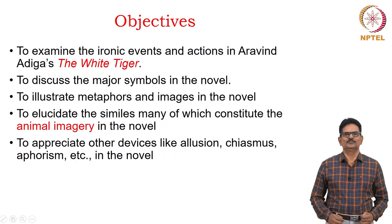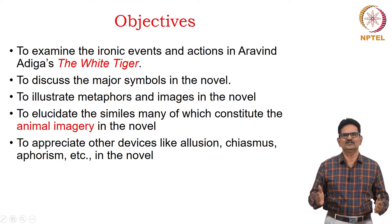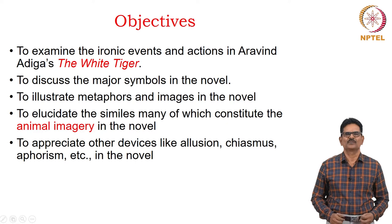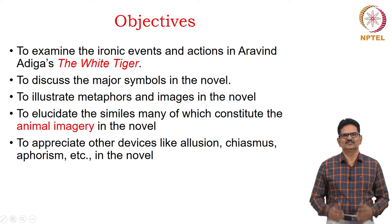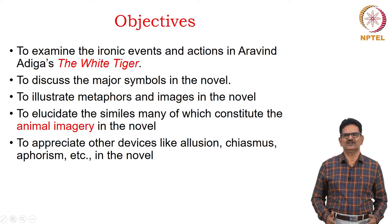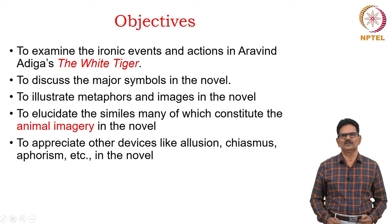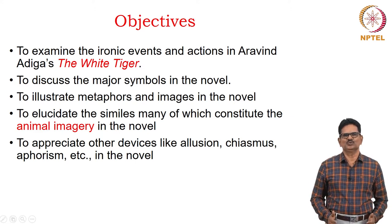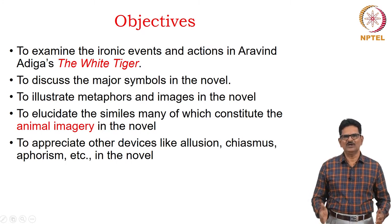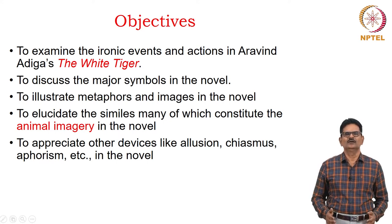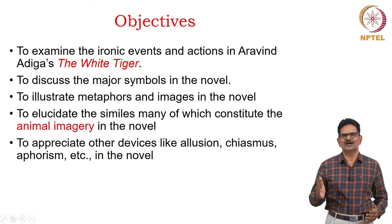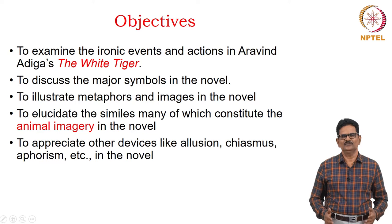Let's see the objectives now. The first is to examine the ironic events and actions in Aravind Adiga's novel The White Tiger. The second objective is to discuss the major symbols in the novel. The third objective is to illustrate metaphors and images in the novel. The fourth objective is to elucidate the similes, many of which constitute the animal imagery in the novel, making it a beast fable. And finally, to appreciate other devices like allusion, chiasmus, aphorism, etc. in the novel.